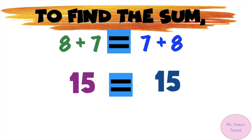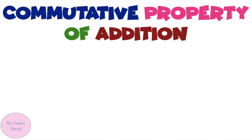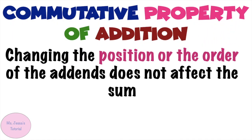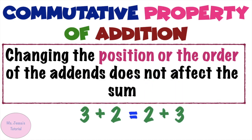This illustrates the commutative property. Commutative property of addition states that changing the position or the order of the addends does not affect the sum. When you say addends, those are the numbers that you added. For example, 3 plus 2 is equal to 2 plus 3, because 3 plus 2 equals 5, and 2 plus 3 also equals 5. So 5 is equal to 5. This is the commutative property of addition.